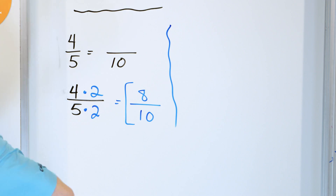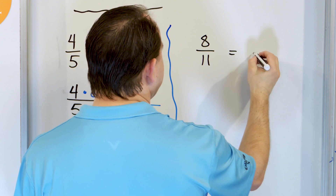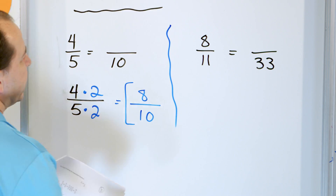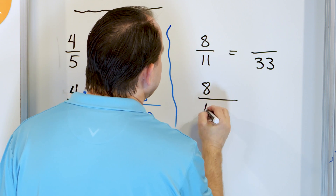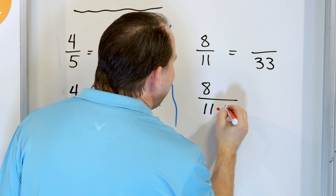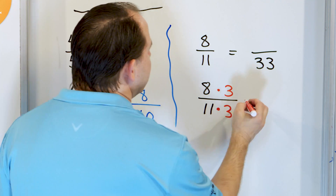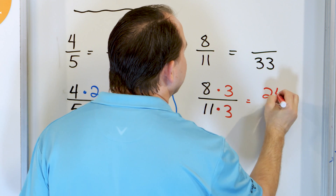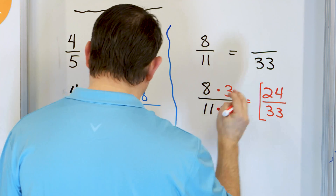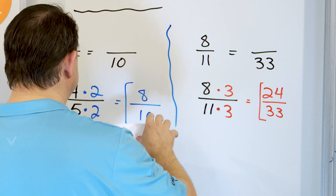All right. What about the fraction 8/11, and the equivalent fraction has a 33 in the denominator? So we can take this fraction 8/11 and multiply it by whatever we want. We're trying to get a 33 here, so we have to multiply by 3. And because of that, we're multiplying also the top by 3. So on the top, 8 times 3 is 24. And on the bottom, 11 times 3 is 33. So what we're saying is that the fraction 24/33 is the same as 8/11.